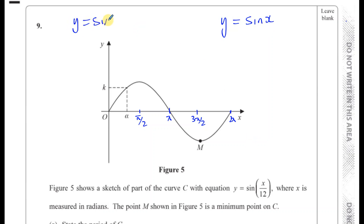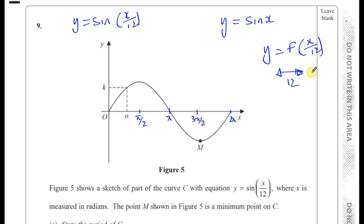What we've got is y equals sine of x over 12. This is of the form y equals f(x over 12), so this is a horizontal stretch with factor 12 — the reciprocal of the number multiplying x inside, which is 1/12. Remember, a change inside the function always applies to a horizontal transformation. Since we're dividing by 12 inside, it's actually a stretch factor of multiplying by 12, not dividing. So all the x-values have to be multiplied by 12.